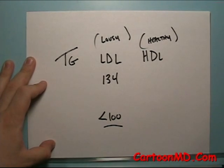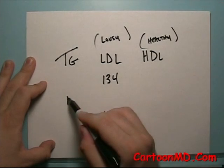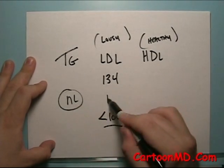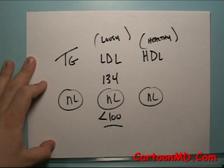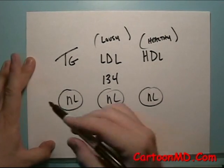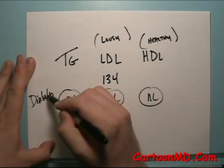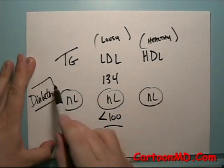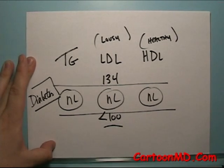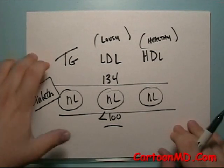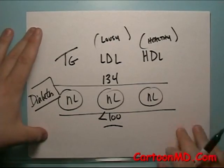But let's say all these numbers are completely normal. Most endocrinologists would actually recommend that in someone with diabetes, even if all the cholesterol numbers are normal, they should still go on some dose of a statin drug.